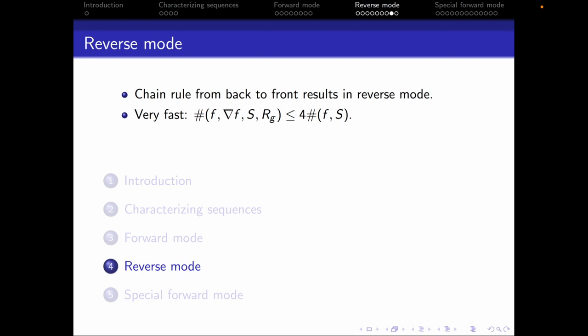So what was the idea of reverse mode? The idea was to write out the chain rule and multiply it from left to right, as opposed to right to left as in forward mode. This gave us a very fast method for calculating the gradient — complexity less than four times the complexity of f. That makes reverse mode, also known as backward mode, a very popular choice for automatic differentiation.